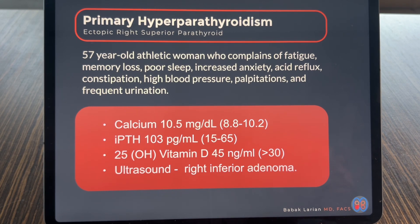Normal PTH is less than 60 to 65. Her vitamin D was normal at 45, so that wasn't the reason. She had an ultrasound on the outside that was read as a right inferior parathyroid.